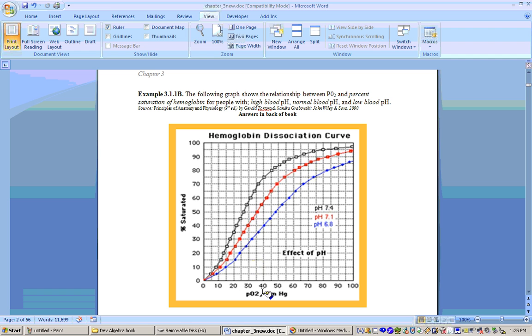This graph shows the PO2 and percent saturation level for people with different blood pH levels. For example, the dark black shaded line is the percent saturation of hemoglobin for somebody that has a pH level of 7.4 or a high blood pH level. A medium blood pH level of 7.1 is graphed in red, and a low blood pH level of 6.8 is graphed in blue. So a question might say, using these graphs above, if three people have the same PO2 level, same x-value, but one has low blood pH, that's in blue, one has normal blood pH, that's in red, and the other one has high blood pH, that's in black, which has the highest percent saturation of hemoglobin?